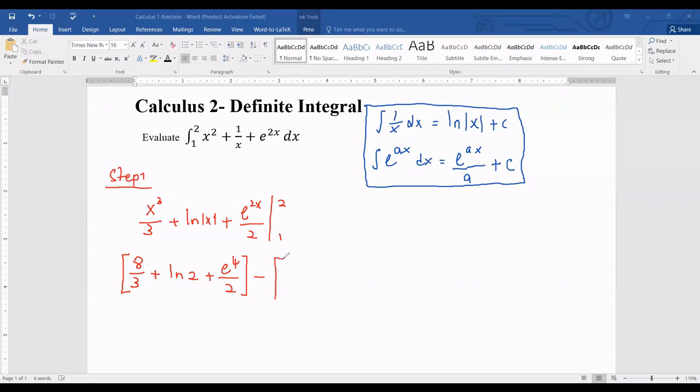And then you need to subtract with after substituting 1 into that function. So minus another square bracket again. So plug that 1 into this function, so you get 1 over 3 plus, long substitute 1 into the x you get ln 1 is always 0 so you just 0, plus and then substitute 1 into this exponential function you get e^2 over 2.